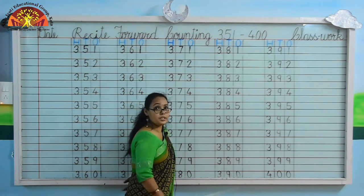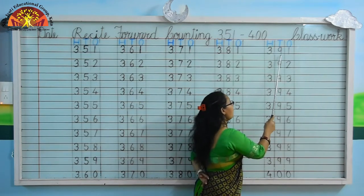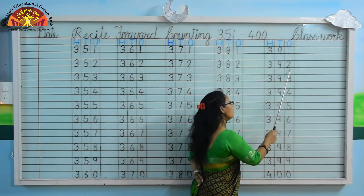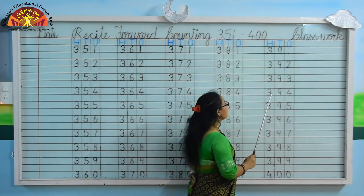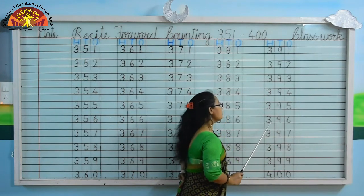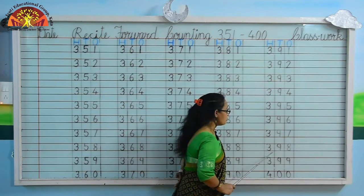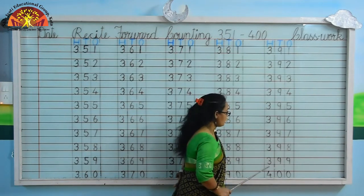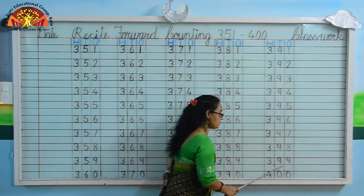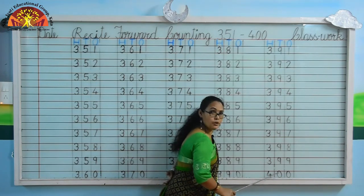Kids, what comes after 390? Yes, 391. 391, 392, 393, 394, 395, 396, 397, 398, 399. Kids, what comes after 399? Yes, very good kids, 400!